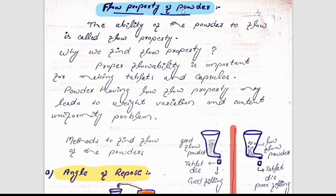Today we will discuss flow property of the powder. This topic is very much important for pharmacy students, especially in competitive exams — two or three questions are already present from this topic. The ability of the powder to flow is called flow property. Why do we need to find the flow property of the powder?